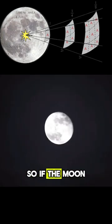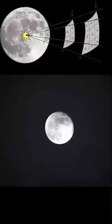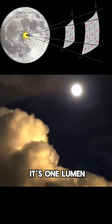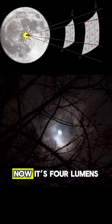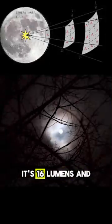So if the moon is 238,000 miles away, and let's just say it's one lumen. And you half your way to the moon, now it's four lumens. Then you half that distance again, it's 16 lumens.